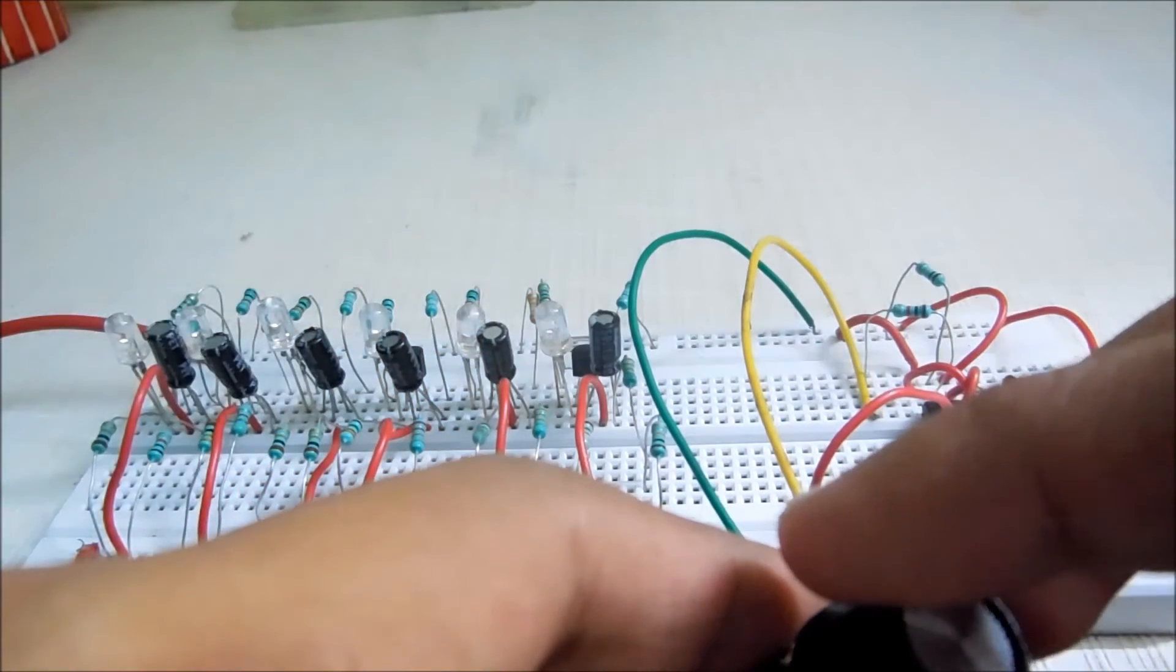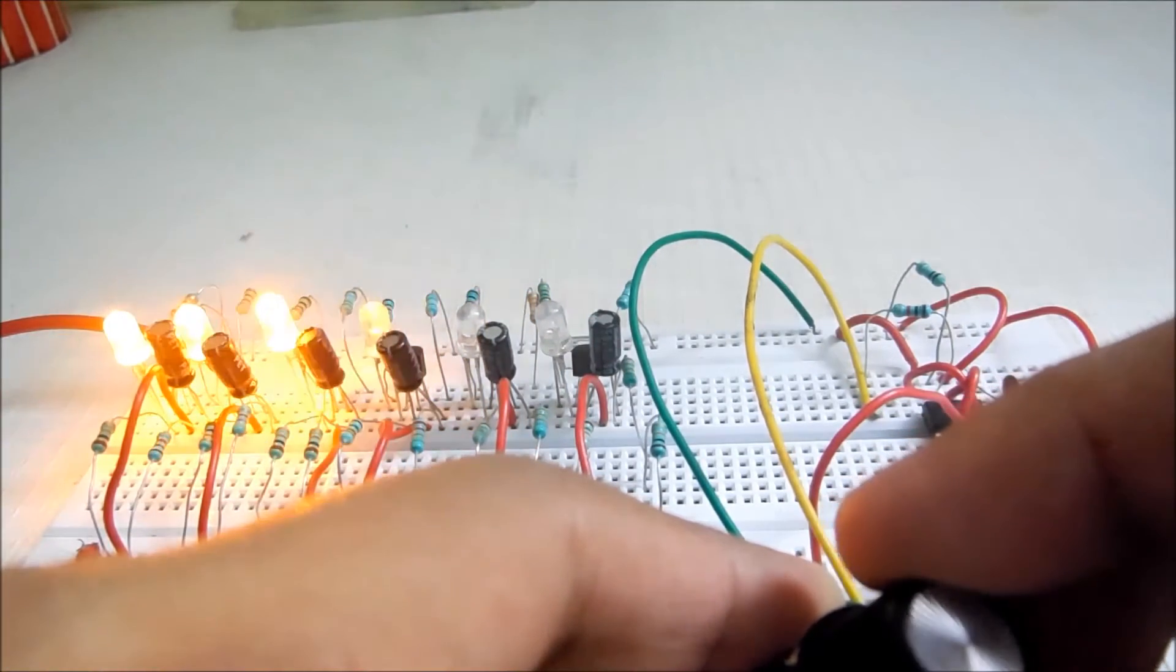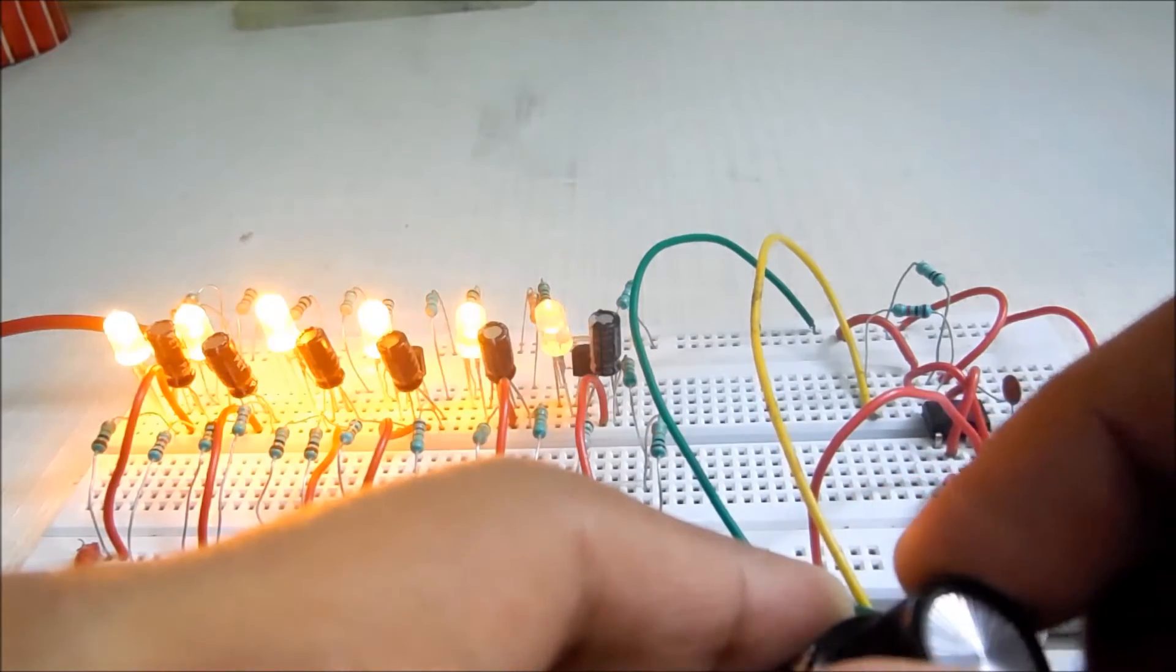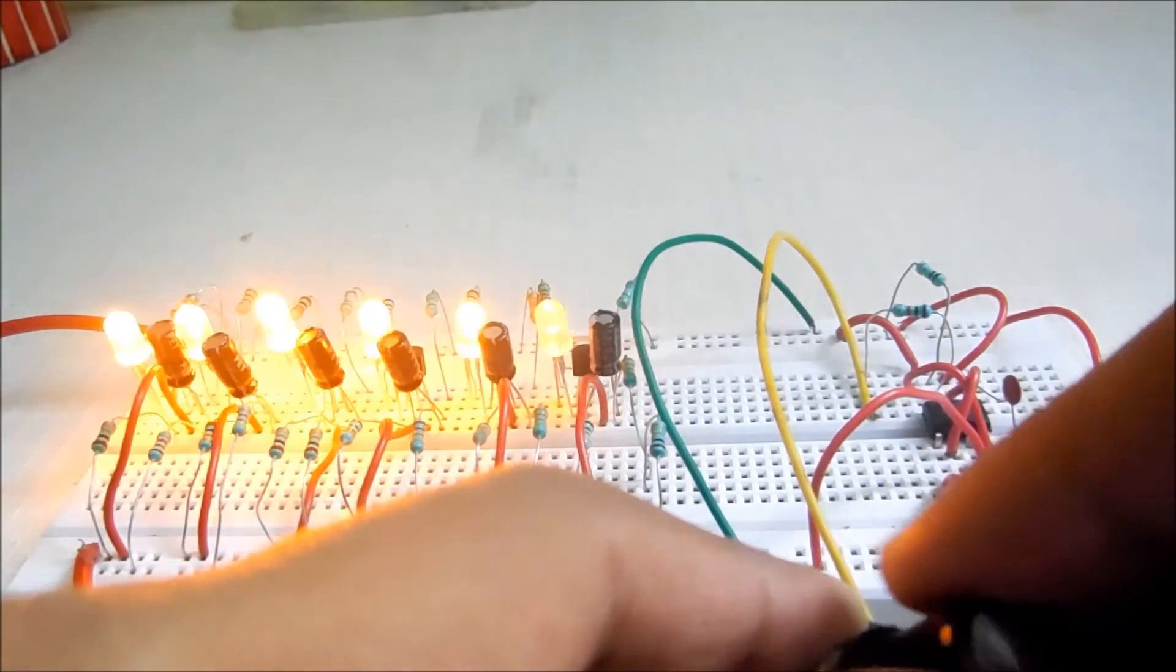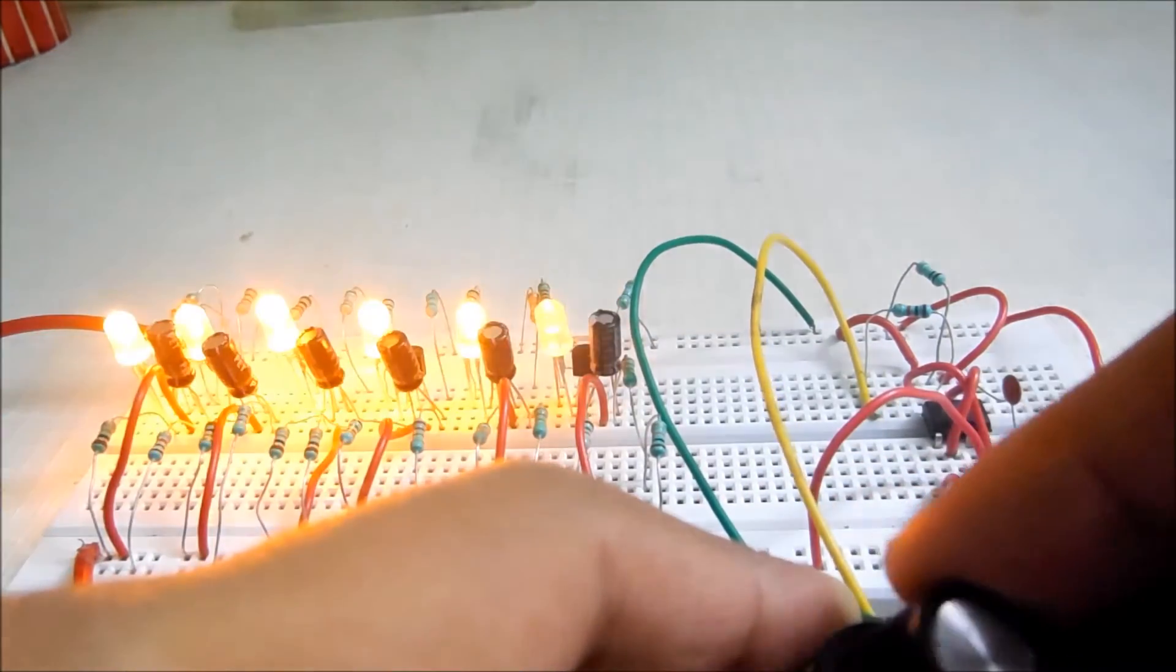At 7K the first LED glows and the last LED glows at 70K. So there are one, two, three, four, five divisions between 7K and 70K.